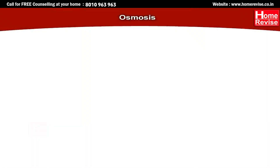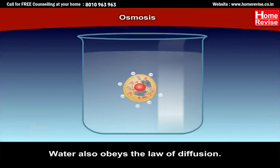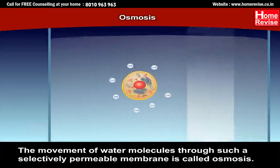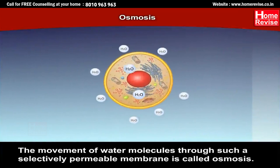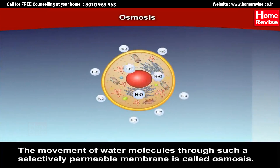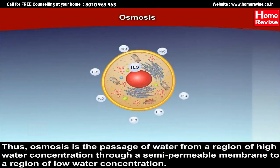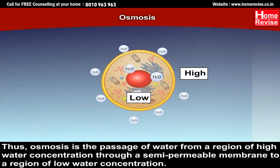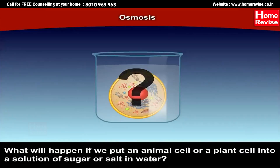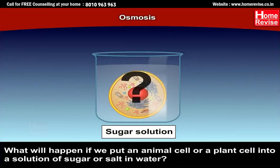Water also obeys the law of diffusion. The movement of water molecules through a selectively permeable membrane is called osmosis. Osmosis is the passage of water from a region of high water concentration, through a semi-permeable membrane, to a region of low water concentration. What will happen if we put an animal cell or a plant cell into a solution of sugar or salt in water?